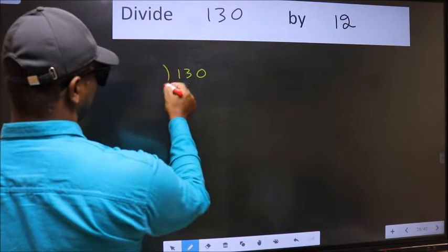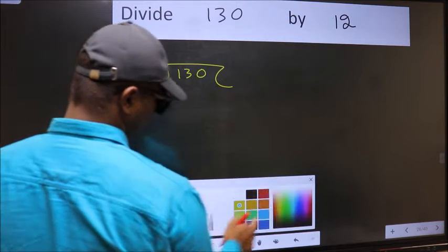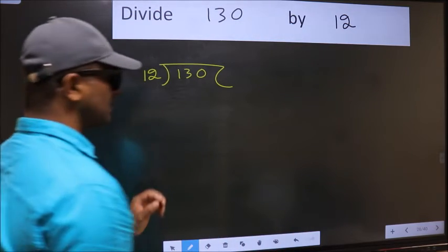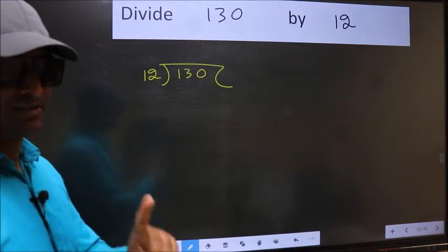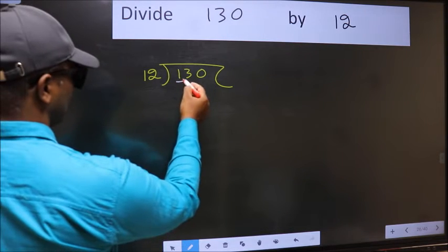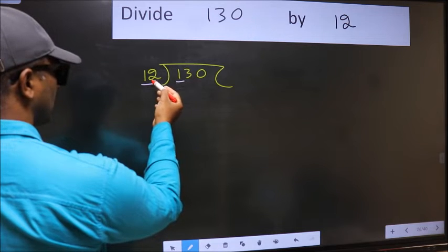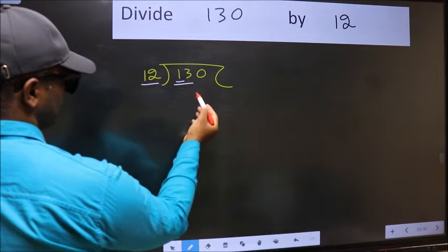130 and 12 here. This is your step 1. Next, here we have 1 and here 12. 1 is smaller than 12, so we should take two numbers, 13.